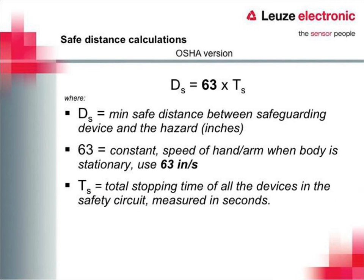The OSHA calculation is: Ds (minimum safe distance) equals 63 times Ts, where Ts is the stopping time of the machine. You can take the stopping time of the machine and add the response time of the light curtain and the response time of the relay, or you can do a safe distance stopping measurement, which gives you all of this in one number — a service Leutze can perform for you. OSHA specifies 63 inches per second as the speed of a hand. To simplify: if your machine takes one second to stop, then the light curtain needs to be mounted 63 inches away. It's very important to know the stopping time of the machine because it dictates how close or far we have to be.